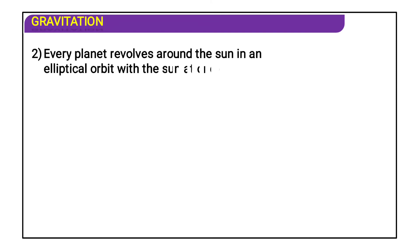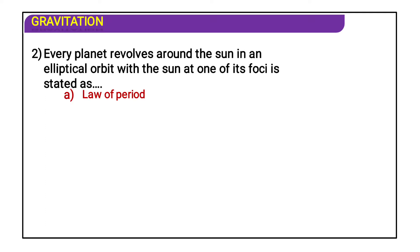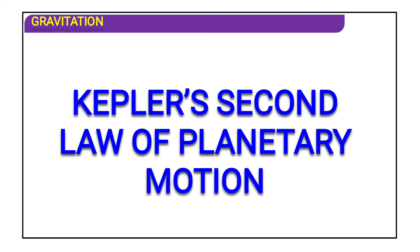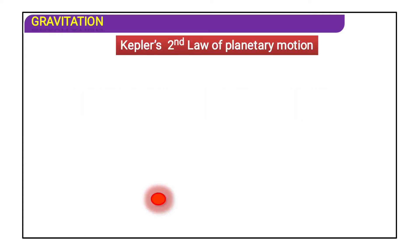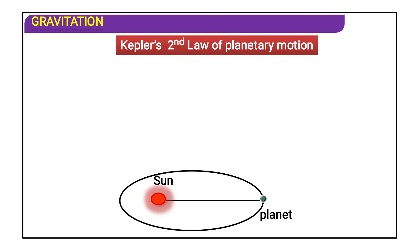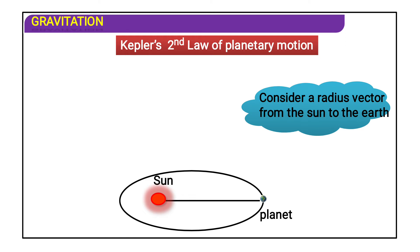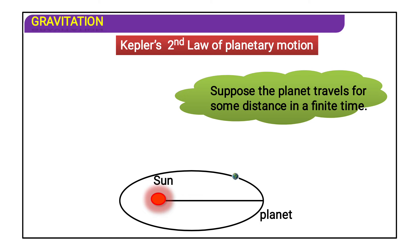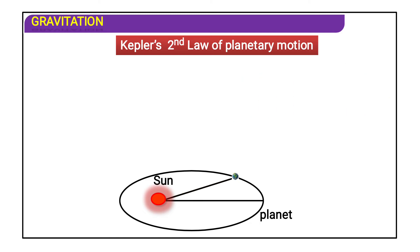MCQ: Every planet revolves around the sun in an elliptical orbit with the sun at one of its foci — this is stated by which law? Options: law of period, law of orbit, law of area, law of gravitation. The answer is law of orbit. Now, Kepler's second law of planetary motion: the sun is at the center and the planet is at some distance with radius vector r. The planet travels a certain distance in a finite time, sweeping an area A1.